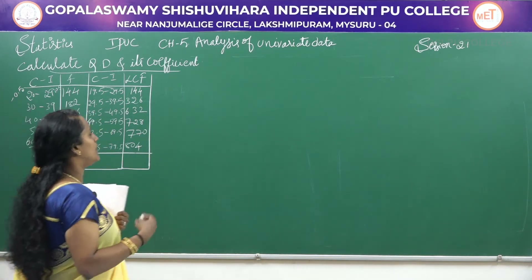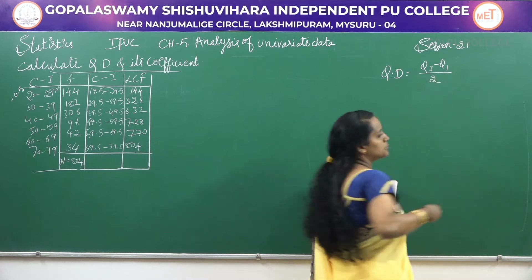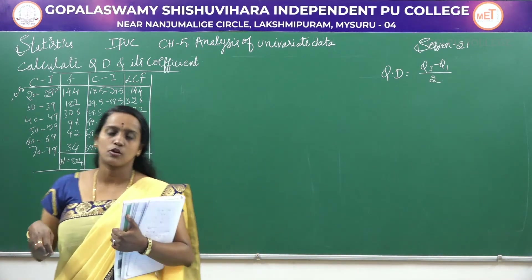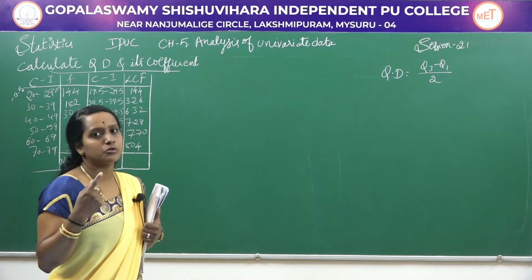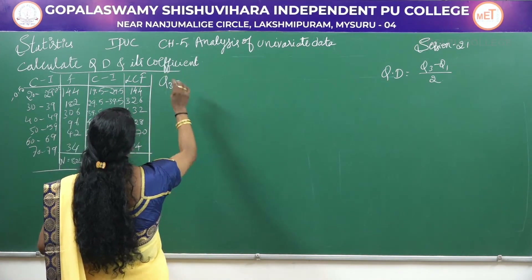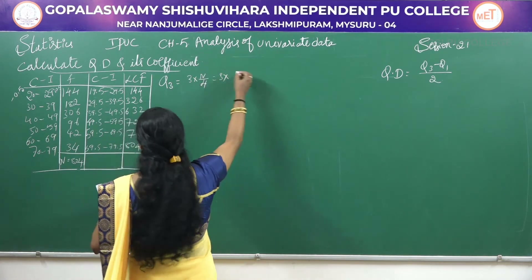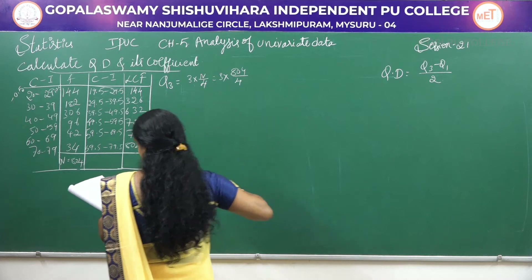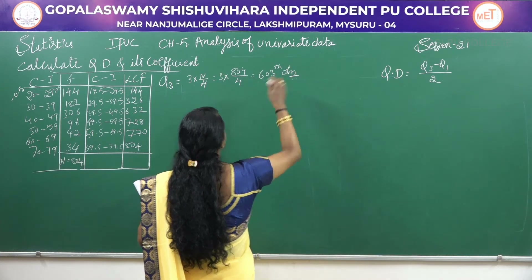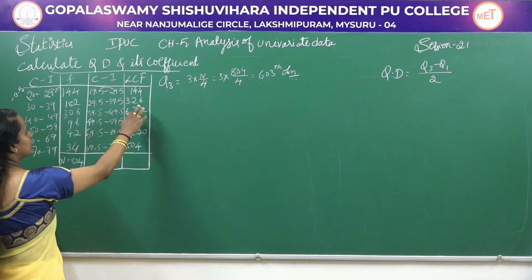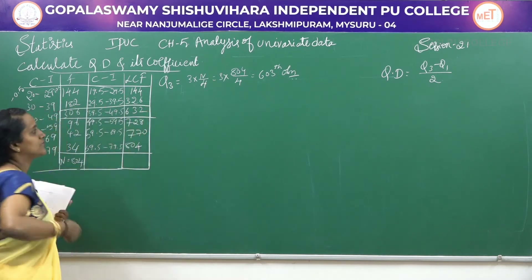To find QD, the formula is QD = (Q3 − Q1) / 2. To find the coefficient of quartile deviation, it is (Q3 − Q1) / 2. To find out Q3, we have to first find out the observation: Q3 is 3 times N by 4. This is 3 × 804 divided by 4. So Q3 value is the 603rd observation. 603 will come in LCF that is 632, so this class interval we have to consider for Q3.